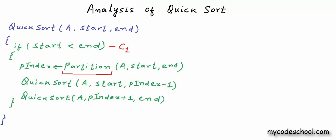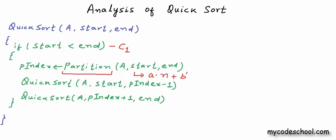Coming back to the quicksort function, the partition call costs O(n) — we can write it as a·n plus some constant. We also have an assignment to variable p_index at constant cost. So overall this statement costs a·n + b'. Now we have two recursive calls. In the partition function we choose an element as pivot — in our implementation we always choose the last element in the segment as pivot.